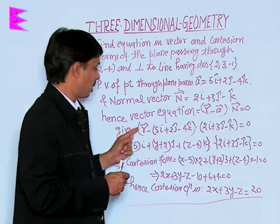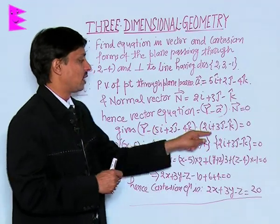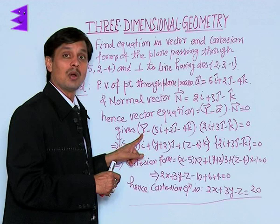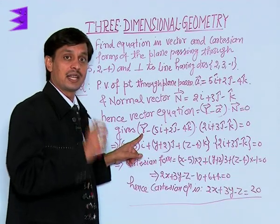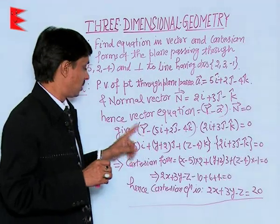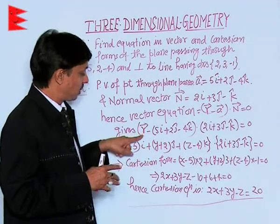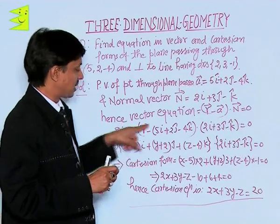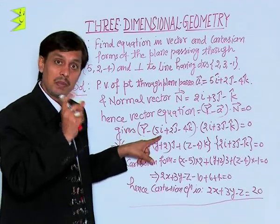You can say this is your vector form, or you can put the value of R as xi + yj + zk, then xi - 5i will be a clubbed term (x - 5)i.